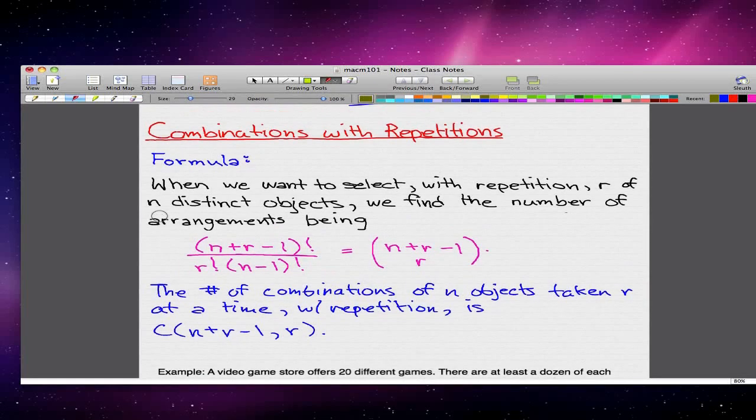We're going to go through combinations with repetitions, and here's the formula. When we want to select with repetition r of n distinct objects, we find the number of arrangements being (n+r-1)! over r!(n-1)!, which is equal to C(n+r-1, r). The number of combinations of n objects taken r at a time with repetition is n+r-1 choose r.